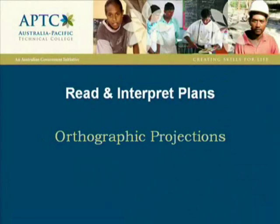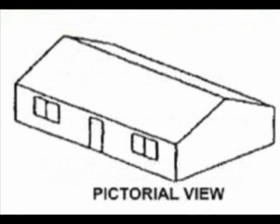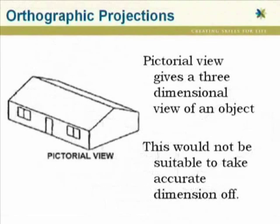Construction drawings are usually presented as orthographic projections. The word orthographic comes from two Latin words: ortho meaning true, and graphic meaning drawing. Orthographic drawings can be measured and give accurate dimensions relative to scale. The opposite of orthographic drawings would be pictorial. Pictorial drawings give the illusion of three-dimensional objects, and would not be practical to take measurements from because a drawing would not be accurate to scale.